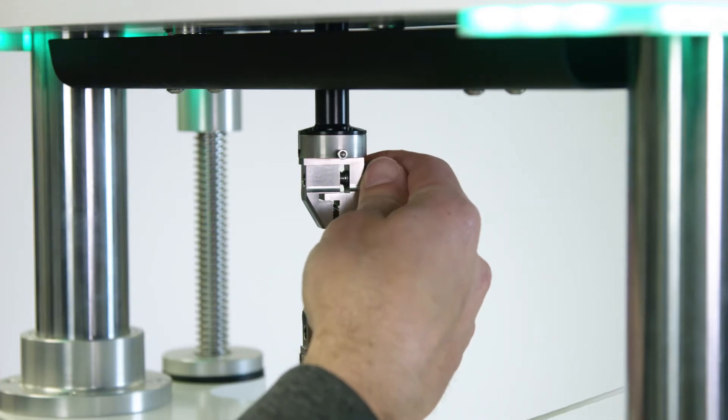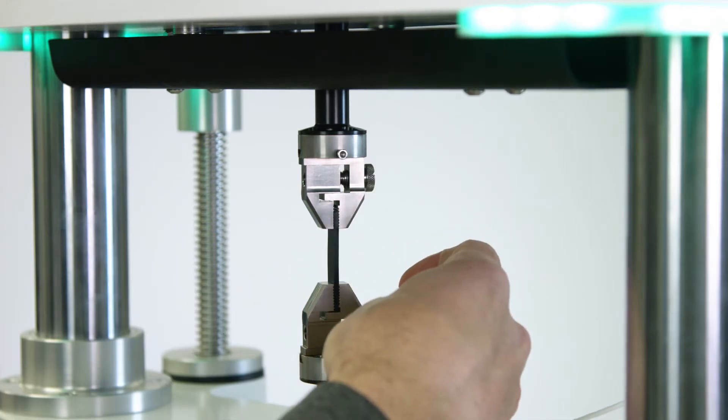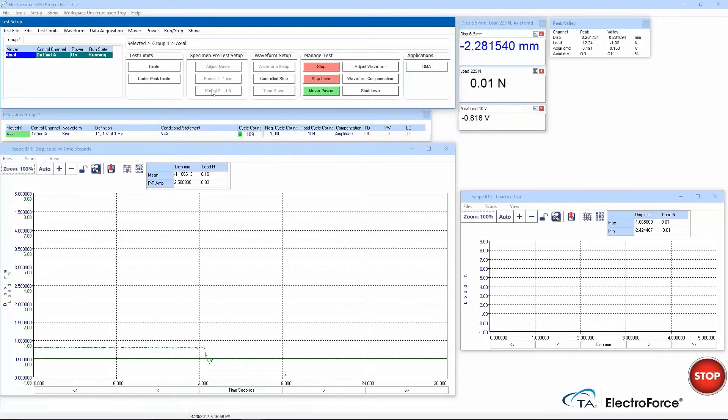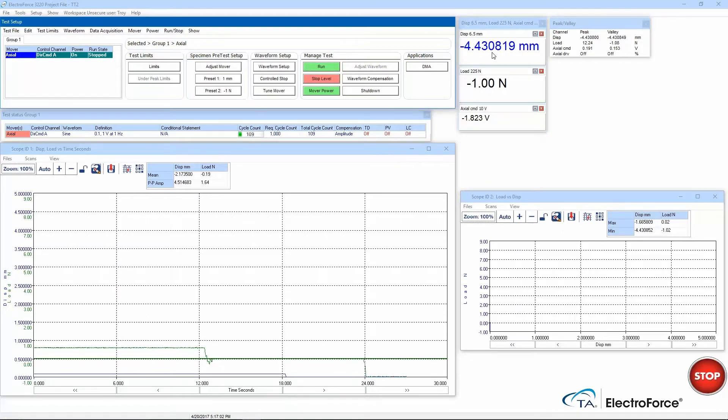For samples used in linear tension or linear compression tests, we can use the corrected sample height feature. To properly use this feature, I must configure the displacement channel in WinTest after my grips are installed and the crosshead is positioned and locked.